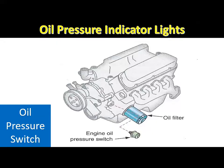The sending unit for the oil pressure indicator light is an on/off switch with a set of normally closed contacts. This sending unit is usually threaded into an opening in the main oil gallery of the engine block. Normally closed contacts are closed with no pressure supplied to the unit and open when pressure is applied.